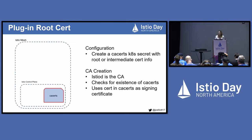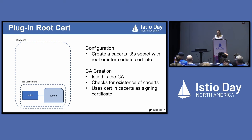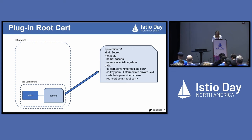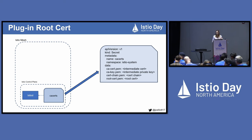The next solution is relatively similar to the previous, but in this case the user creates a Kubernetes secret named ca-certs with root or intermediate cert information. When Istio-D is created, it looks for the existence of this secret and uses the certificate info in that secret as its signing certificate instead of creating its own self-signed cert. You can specify an intermediate cert here, so Istio-D can issue certificates with an intermediate level of trust and function as an intermediate certificate authority. This means you can keep the private key of your root CA off of your cluster, addressing the problems of the previous example.